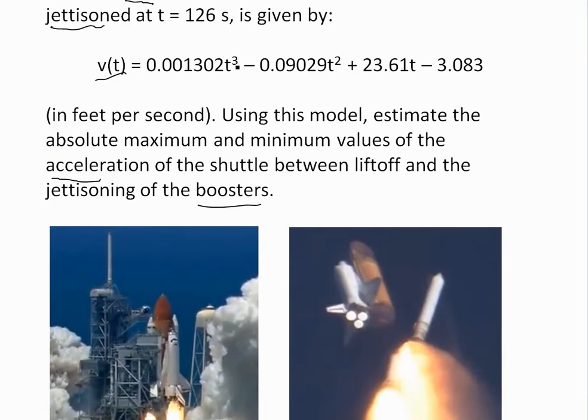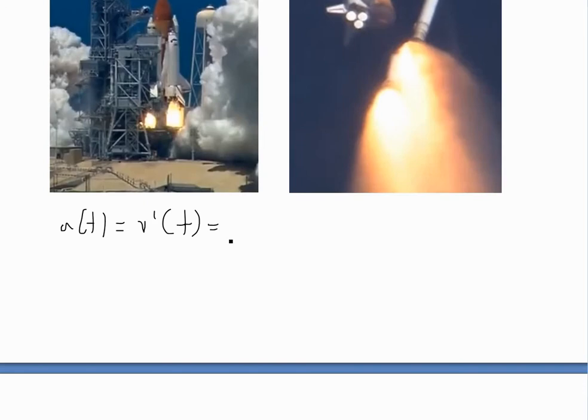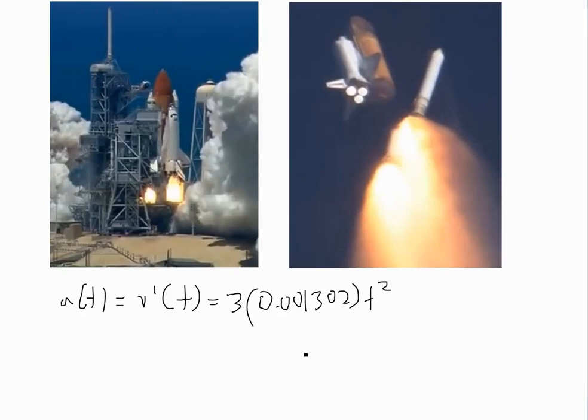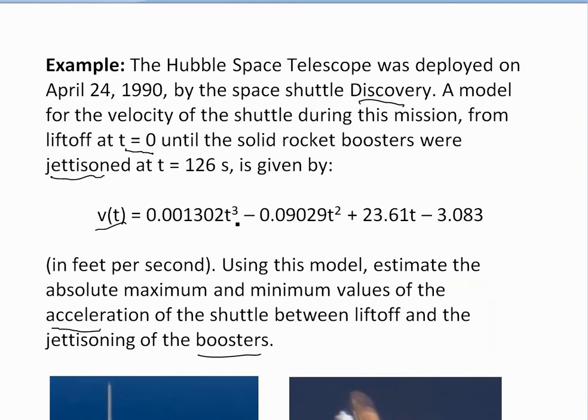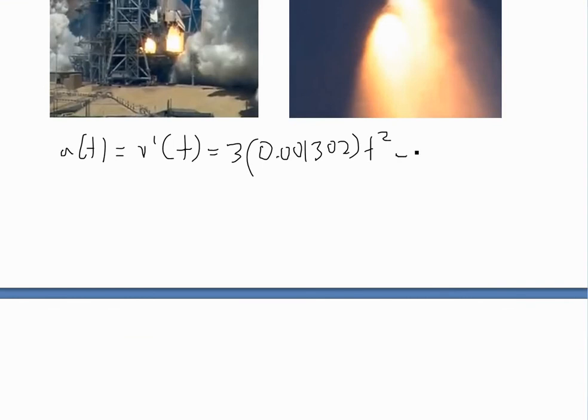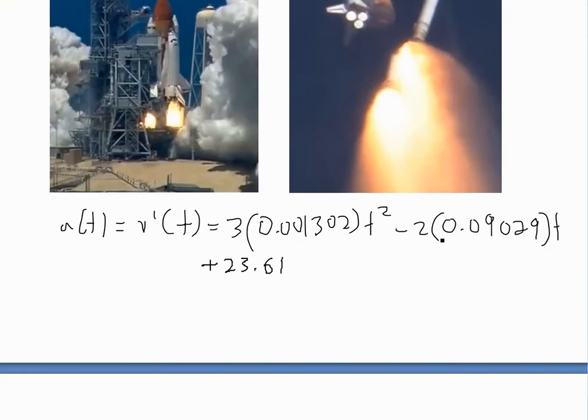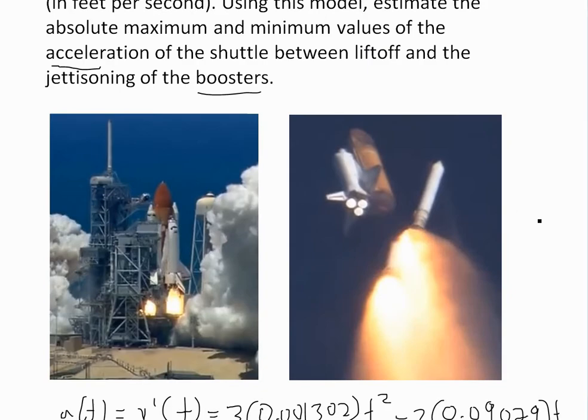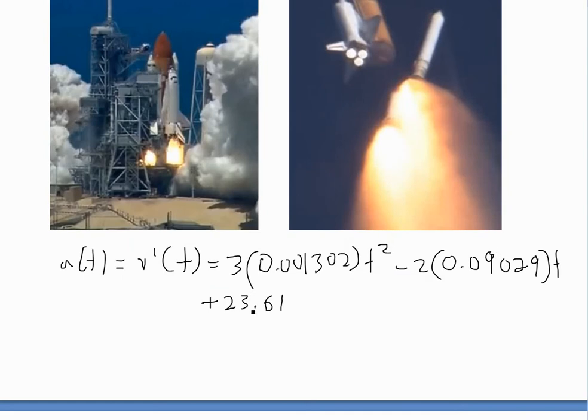This would equal—we bring the three down—so 3 × 0.001302 × t², bringing that down using the power rule for derivatives. We do the same thing for the next one: -2 × 0.09029 × t, bringing this power down using power rule as well, and then +23